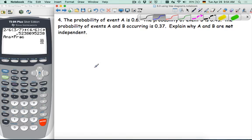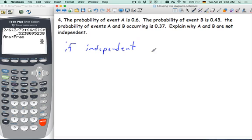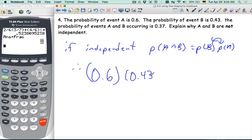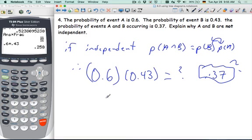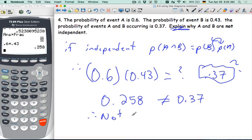When two events are independent, probability of A and B should equal probability of A times probability of B. So that's a lot from the previous video. So therefore, if event A and event B are independent, then point six times point four three should equal point three seven. Let's check. So point six times point four three. This gives us zero point two five eight, which does not equal zero point three seven. That's enough for us to say that they are not. That's enough explanation, not independent.